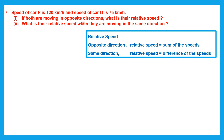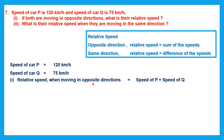Question one — they are moving in opposite directions, so we find the sum of the two speeds. Relative speed when moving in opposite directions equals speed of P plus speed of Q: 120 kilometers per hour plus 75 kilometers per hour equals 195 kilometers per hour. That is the relative speed when moving in opposite directions.